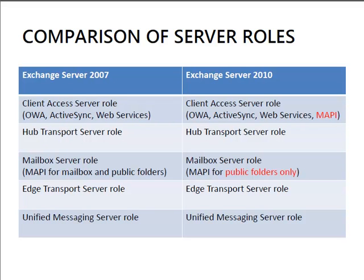Those roles were introduced with Exchange Server 2007 but have gone through some minor adjustments in the transition to Exchange Server 2010. The Client Access Server role has changed a little bit — in Exchange Server 2007 it was responsible for Webmail, ActiveSync, and other web services, but in Exchange Server 2010 that role is expanded to also include Outlook client MAPI communications. Where previously an Outlook client would connect directly to the mailbox server, in Exchange Server 2010 they connect to a Client Access Server for MAPI communication and the connection is proxied to the Mailbox Server role.